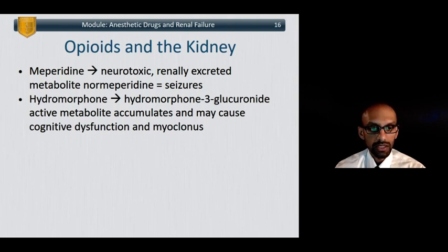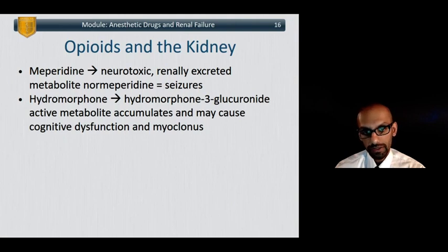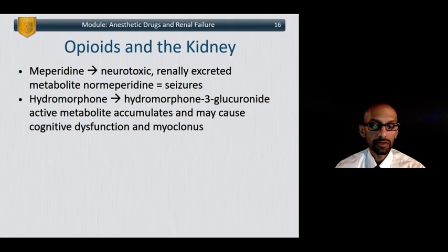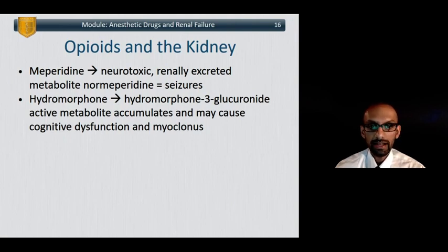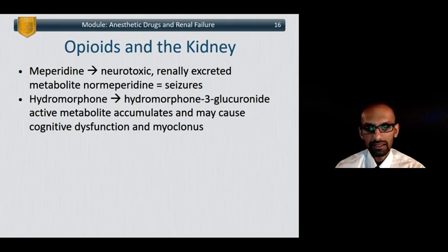Interestingly, there was a MOCA recertification question about opiates and renal failure where the answer explanation stated that hydromorphone is safe — clearly whoever wrote it didn't read Miller or Barash's Anesthesia, because hydromorphone is technically not a totally benign drug in renal failure.